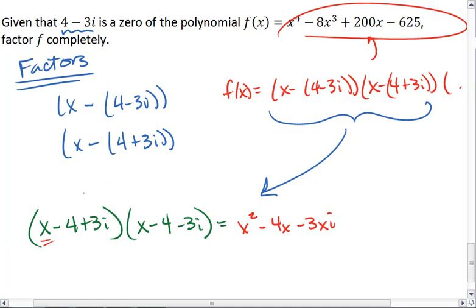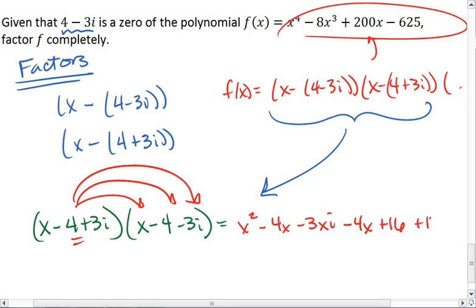Then I take the second term and distribute it. I get negative 4x plus 16 plus 12i.